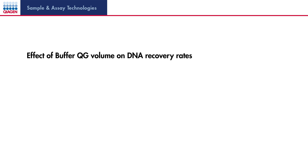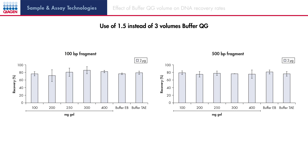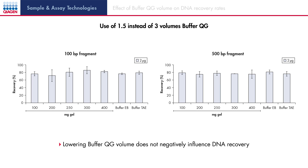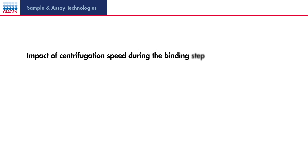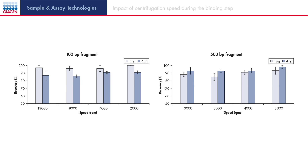Another important parameter in the gel extraction procedure is the binding buffer, buffer QG. We tested the QIAquick gel extraction protocol with a reduced volume of buffer QG, and the data suggests that in general, reduction of the binding buffer volume is possible without reducing the DNA recovery rate. During the binding step, not only does the volume of the binding buffer play an important role, but also the centrifugation speed. Comparing different centrifugation speeds ranging from 2,000 RPM to 13,000 RPM, a correlation between centrifugation speed and recovery rate becomes apparent. A reduced centrifugation speed has an overall positive effect.